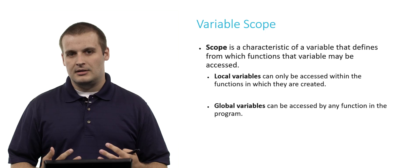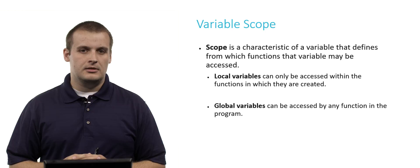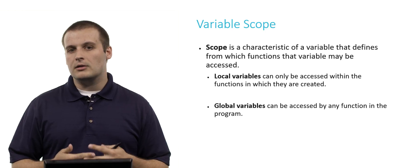Scope is a characteristic of a variable that defines from which functions that variable can be accessed. There are two primary scopes in C: local variables and global variables.